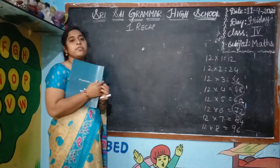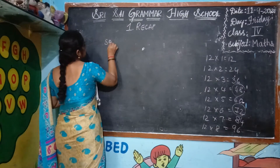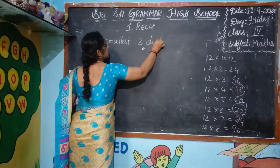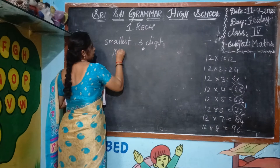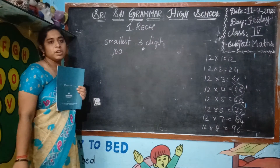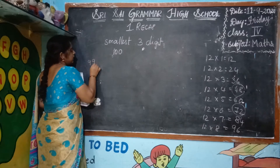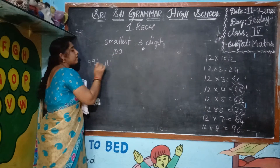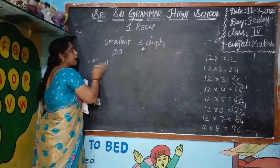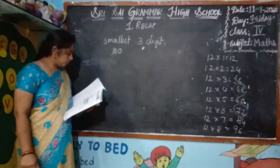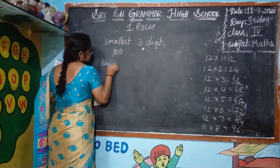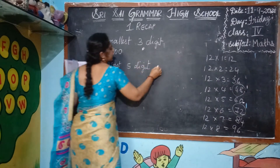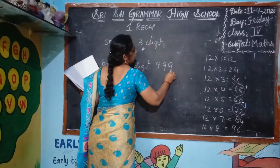The smallest 3-digit number — what is the smallest 3-digit number? 100, because 999 is the greatest 3-digit number. 111 is also a 3-digit number, but 100 is the smallest. And the biggest 5-digit number is 99999.